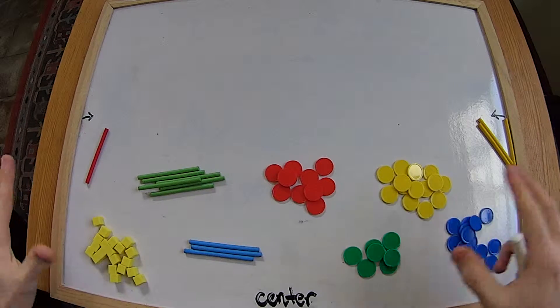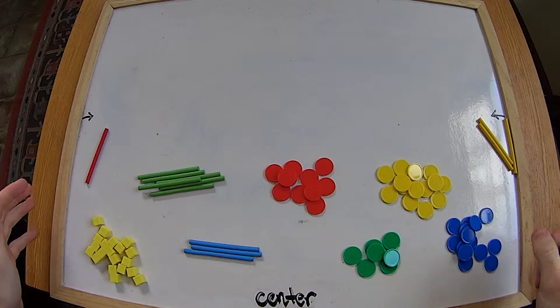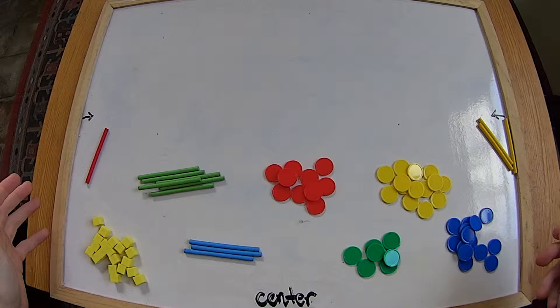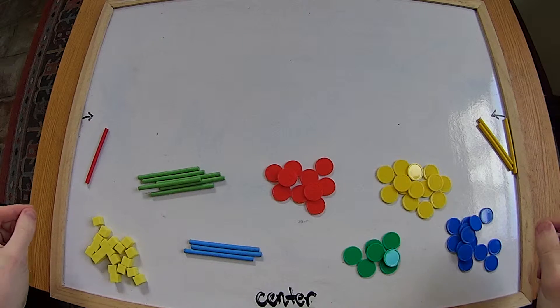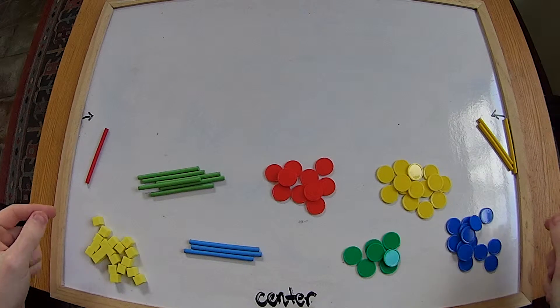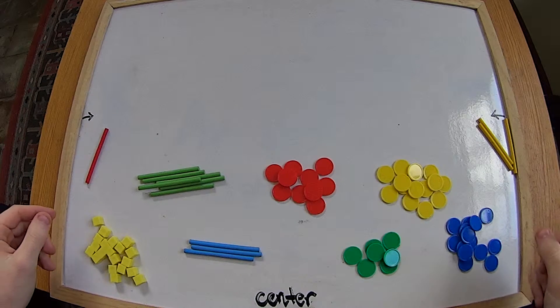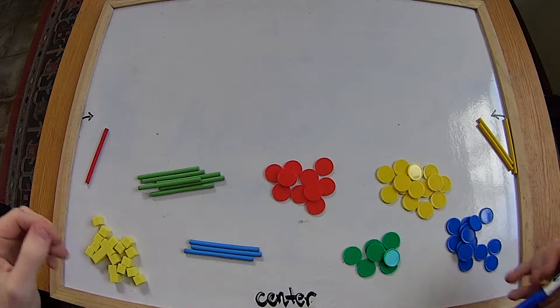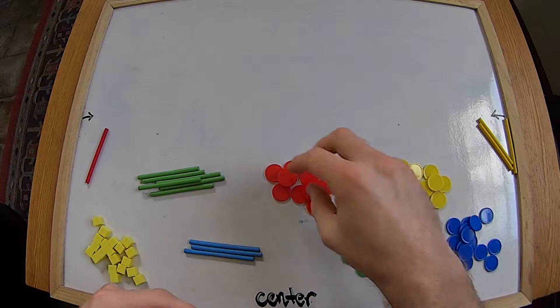In this video we've got a whole bunch of different objects and what we're going to try and do is count how many of each object we have and then put them in order. Okay, so let's get started.